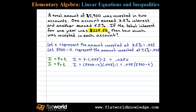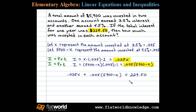The total interest for the year was $229.50, so that's going to equal the sum of the interest in both accounts. This defines our algebraic setup: the interest in the first account, 0.035X, plus the interest in the second account, 0.045 times (five thousand nine hundred minus X), equals 229.50. This is our algebraic equation and we're going to use it to solve for X.